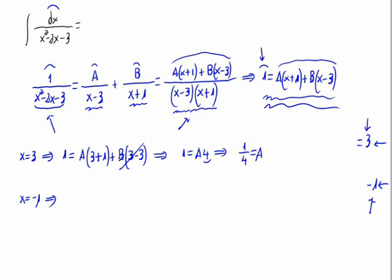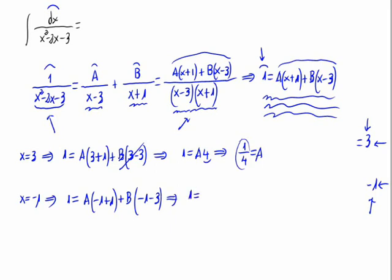Now substituting x equals minus 1, the A term disappears. We get: 1 equals B times (minus 1 minus 3), so 1 equals minus 4B, which gives B equals minus 1/4. Now we have the values of A and B, and we can substitute them back into the partial fraction decomposition.